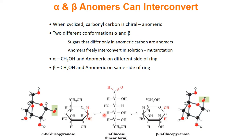Now, this ring — this cyclization and ring formation — a sugar can un-cyclize and go back to its linear form. When you're back in the linear form, this carbon-carbon bond can freely rotate. So you can switch from alpha to beta sugars in solution, and this happens all the time. If you have two sugars that differ only at the anomeric carbon, we call these anomers. So alpha-D-glucopyranose and beta-D-glucopyranose are anomers of each other. They're free to interconvert, and we call this mutarotation.